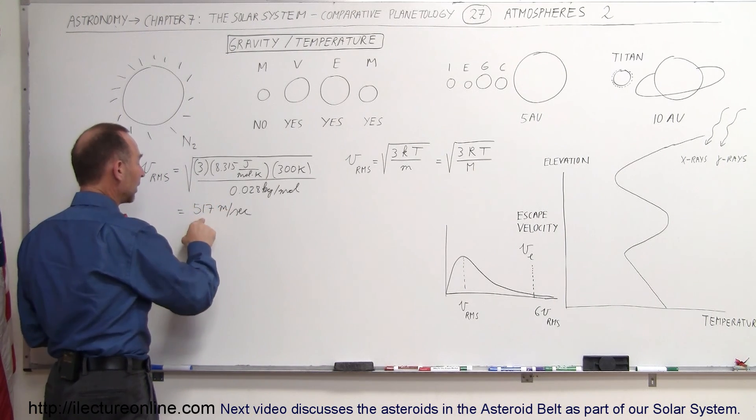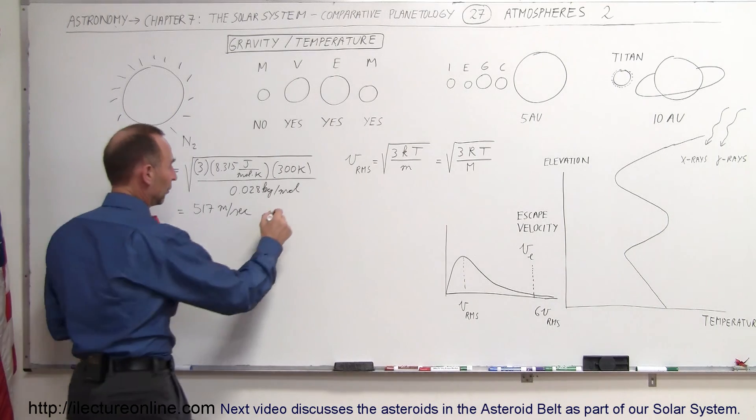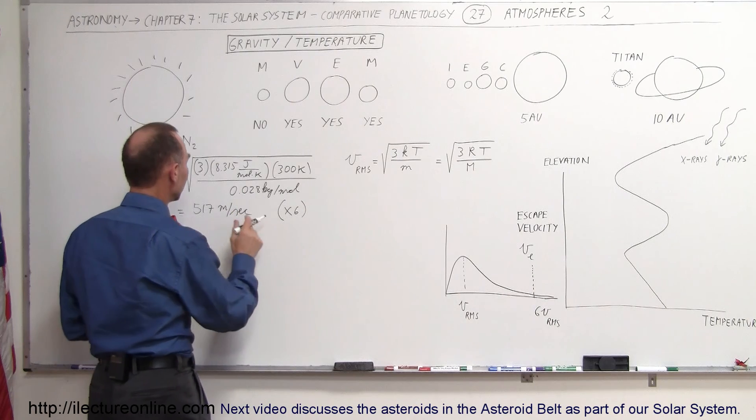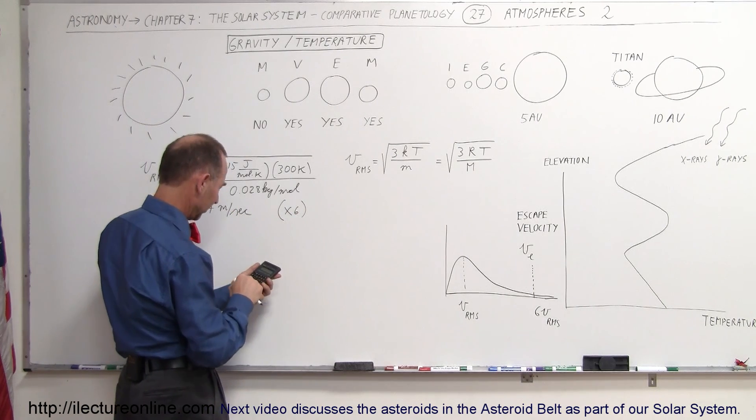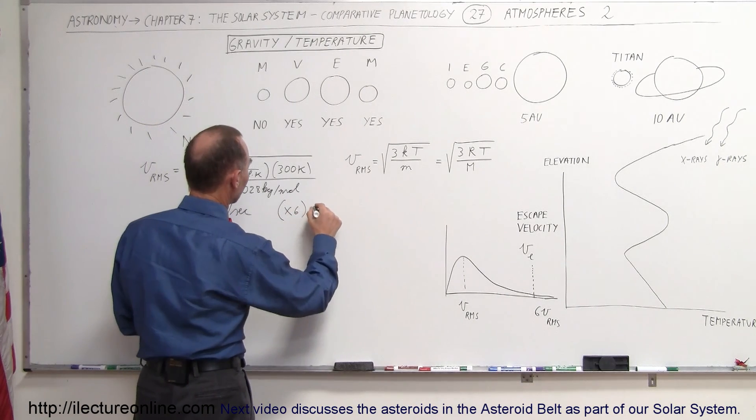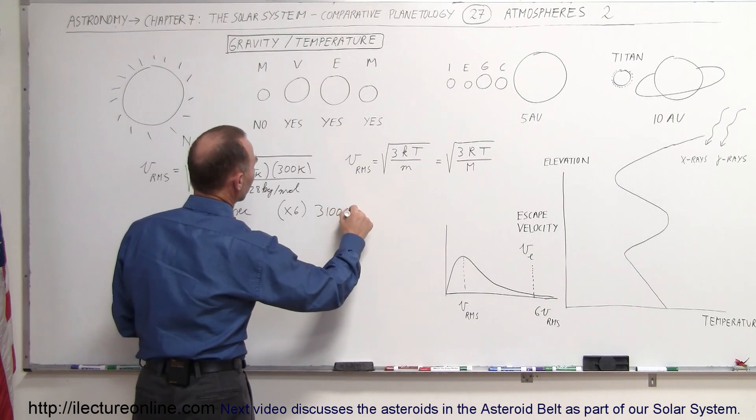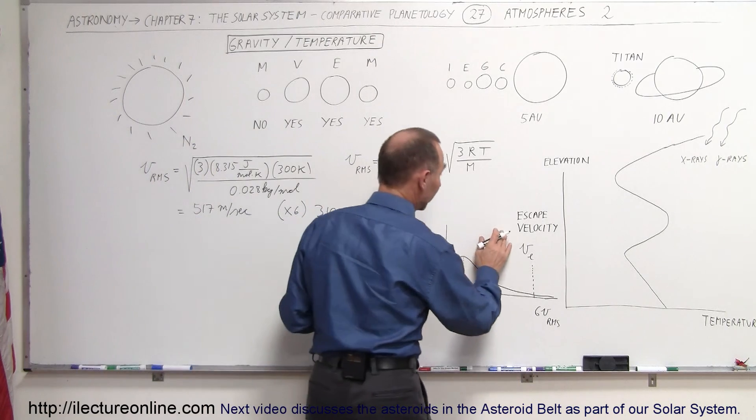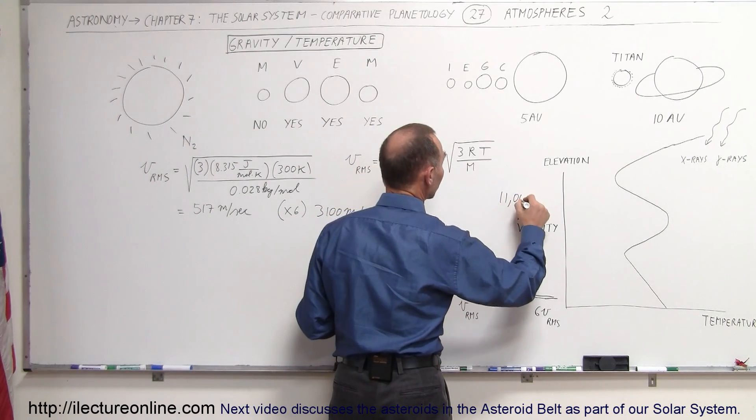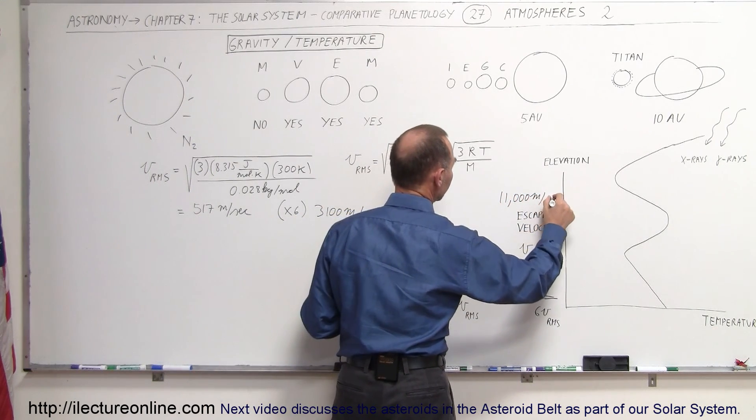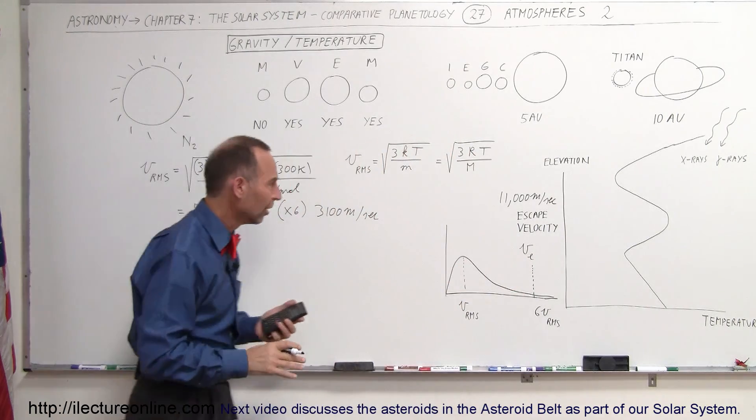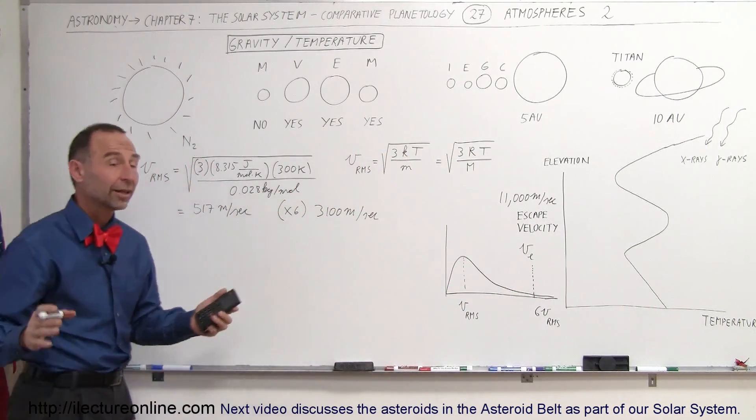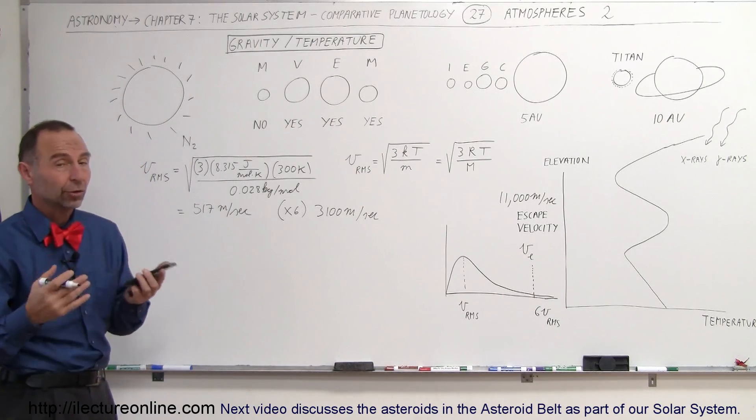Now, if we multiply that times 6 for the very fastest in the atmosphere, that would give me about 3,100 meters per second. That would be well under the escape velocity of the Earth, because the escape velocity of the Earth is about 11,000 meters per second, about 7 miles per second. So, you can see that this is well below the escape velocity. We don't have to really worry about molecules escaping.